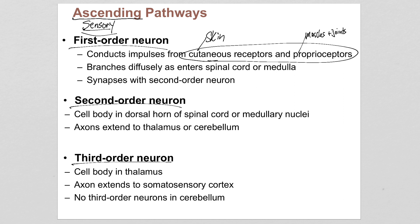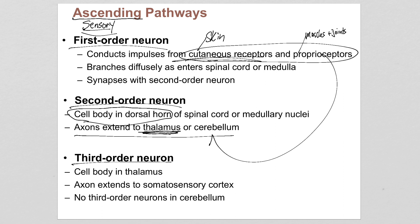The second order neuron's cell body is in the dorsal horn — the gray matter of the spinal cord. Then its axon is going to go all the way to the brain. You have one of two options: if this is a conscious pathway from the skin, we're going to the thalamus — that would be the cutaneous receptors. And if it's a proprioceptor, they go straight to the cerebellum, because the cerebellum has a pretty important role in taking care of posture and involuntary movements.